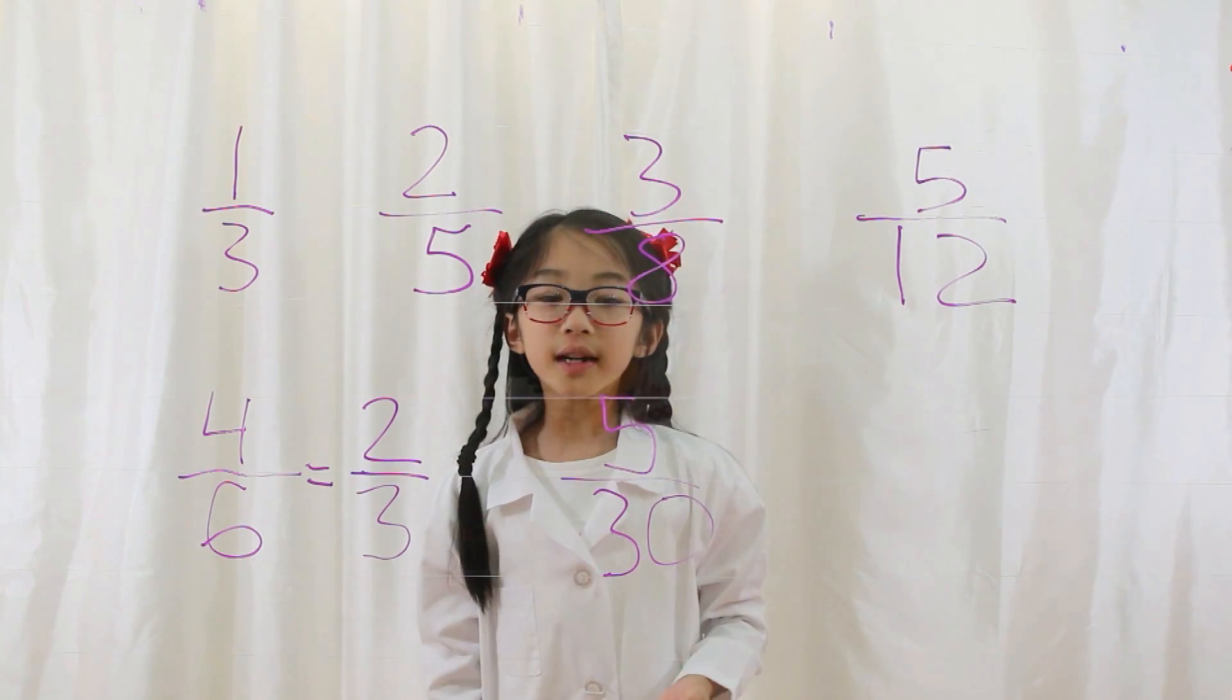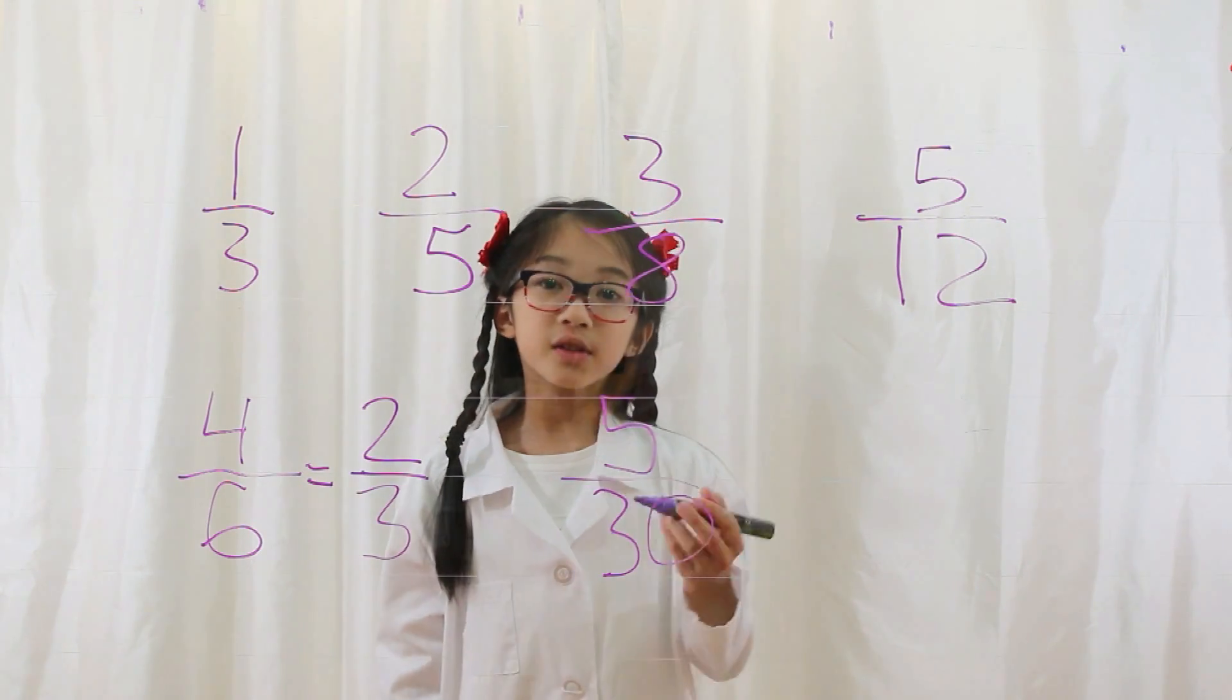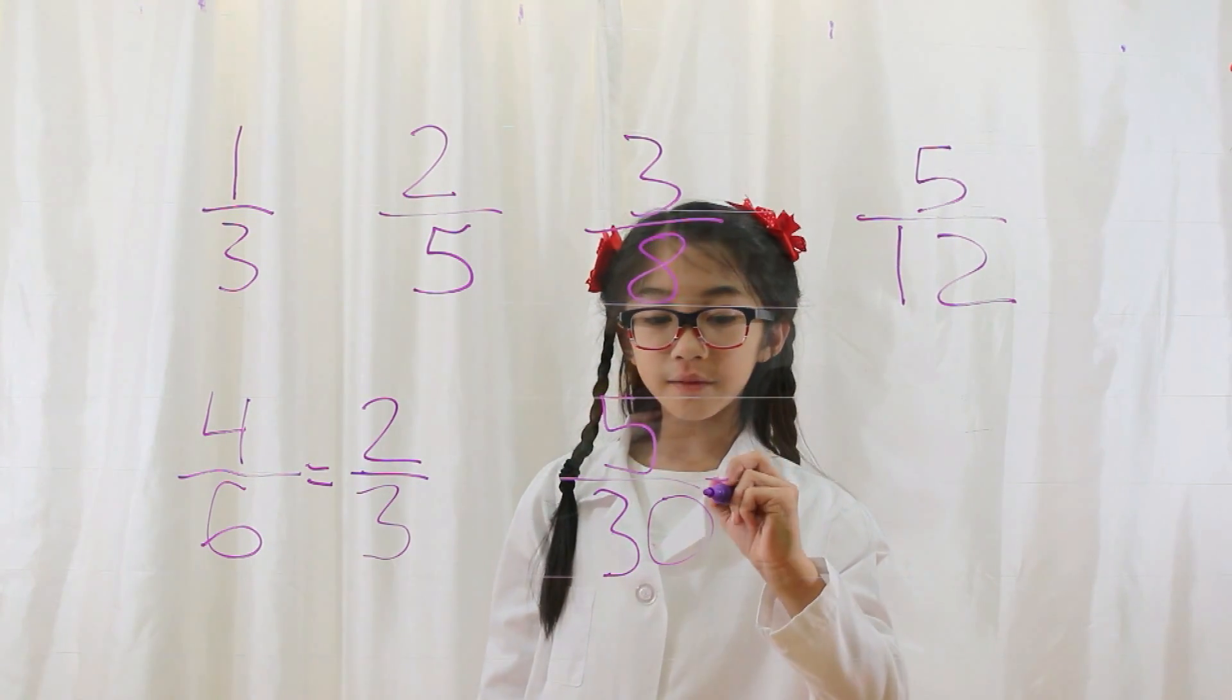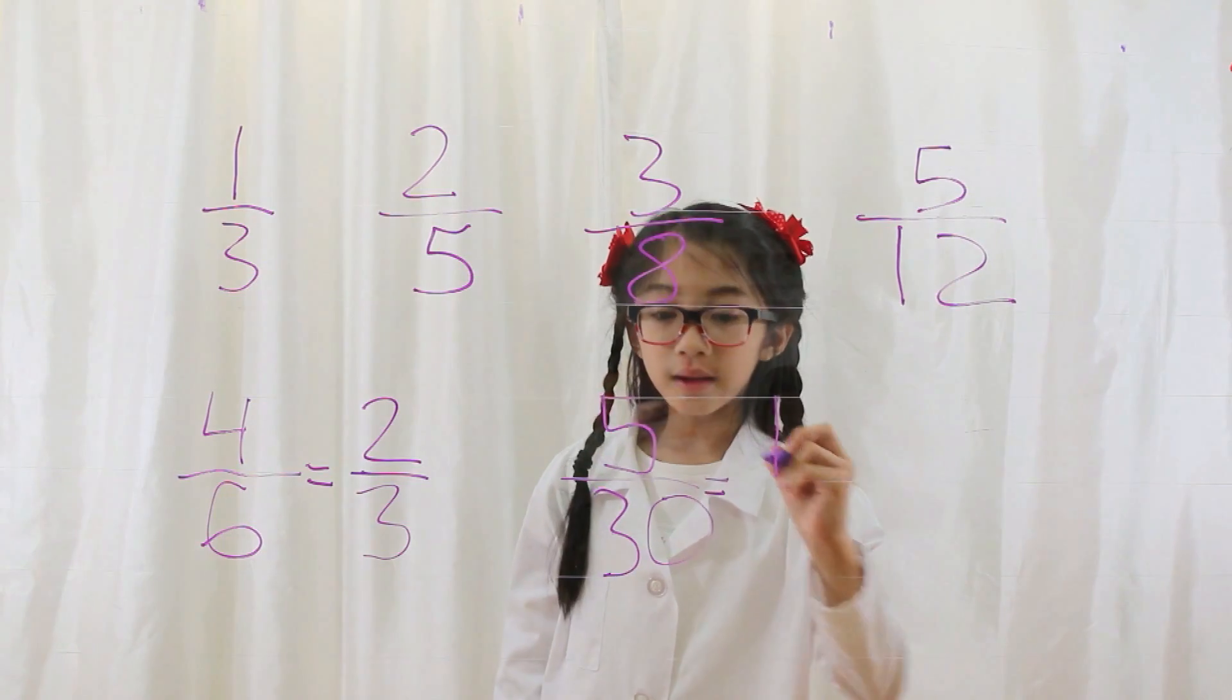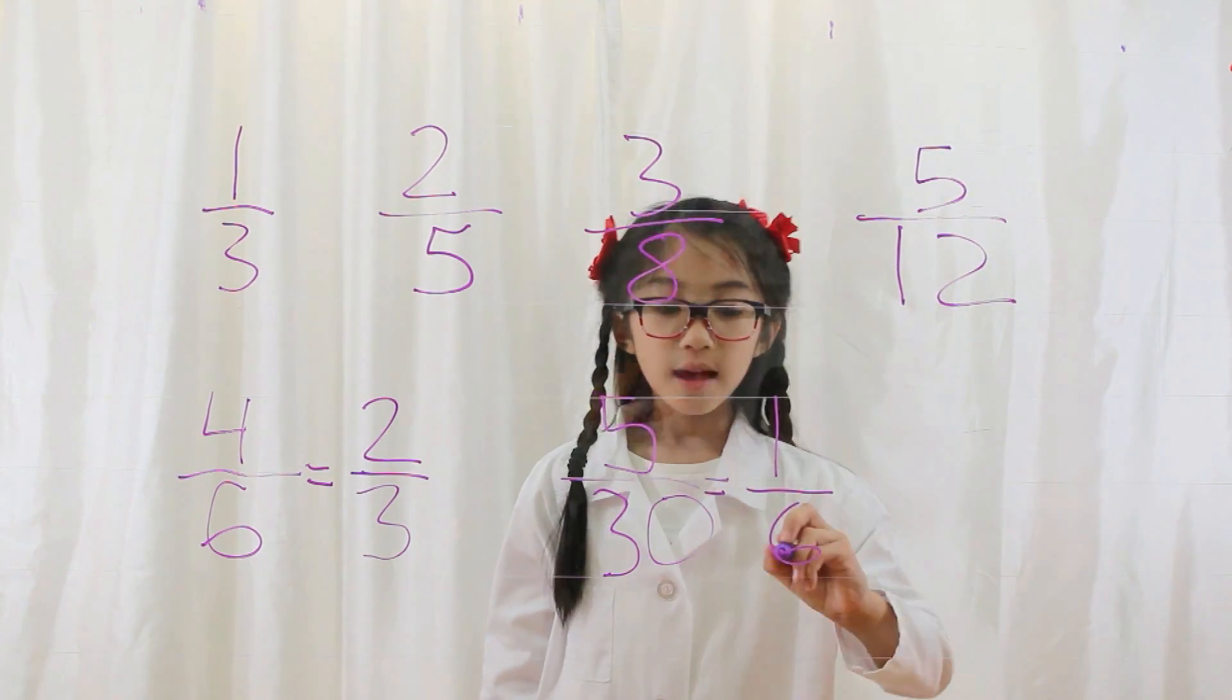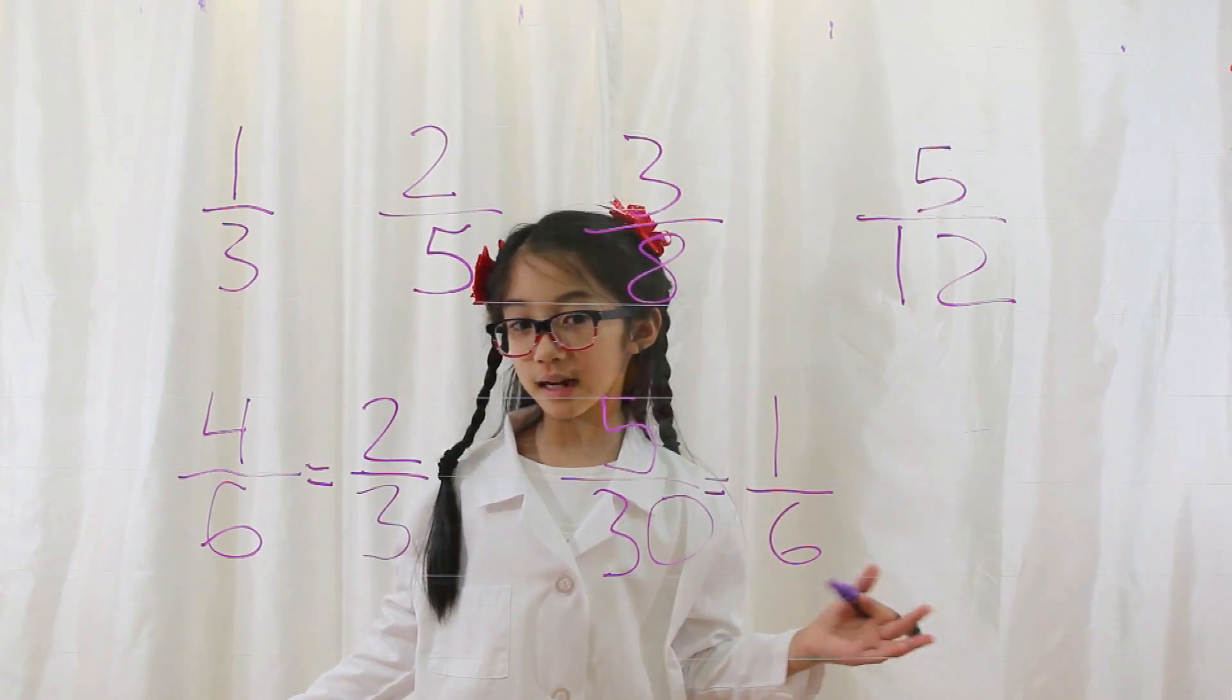Thirty can divide by five. So basically, five divided by five equals one. Thirty divided by five equals six. Five-thirtieths equals one-sixth.